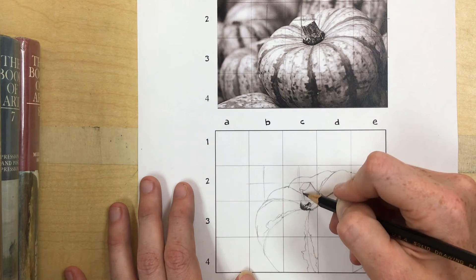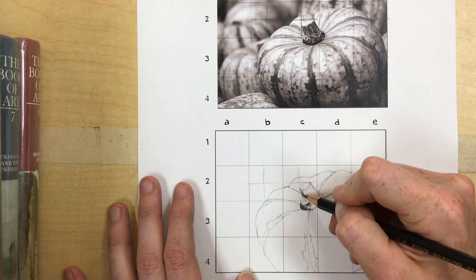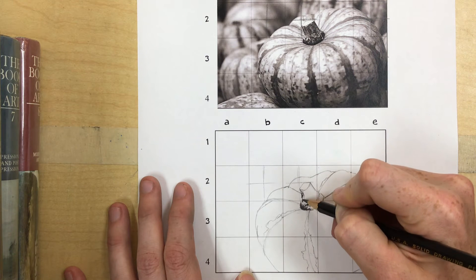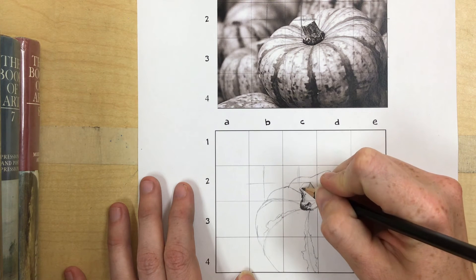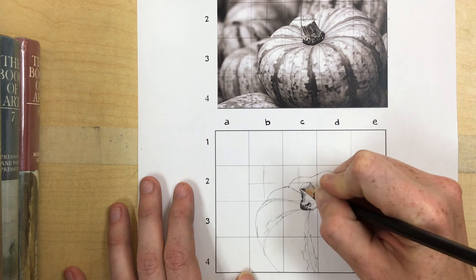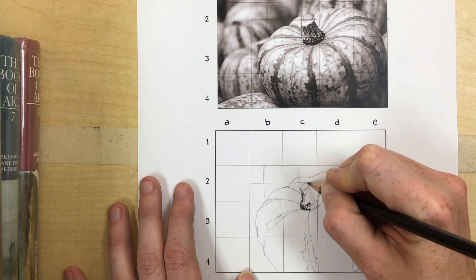And then I can start getting like the texture on the stem, kind of building that up. Oh look, there's a little bit of stippling. I can see that would be a good technique to use up here on the top of the stem because it's kind of porous a bit.